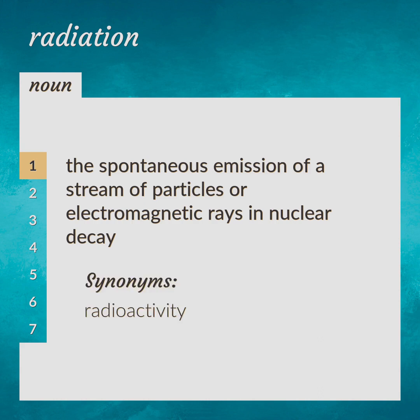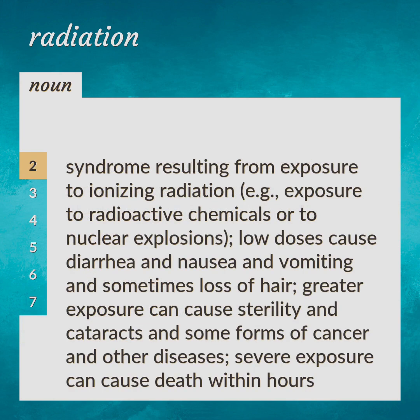Radioactivity. Syndrome resulting from exposure to ionizing radiation, e.g., exposure to radioactive chemicals or to nuclear explosions. Low doses cause diarrhea and nausea and vomiting and sometimes loss of hair. Greater exposure can cause sterility and cataracts and some forms of cancer and other diseases. Severe exposure can cause death within hours.